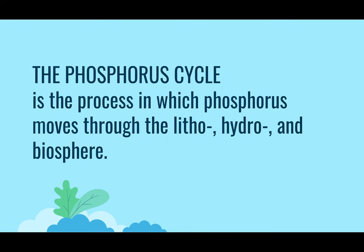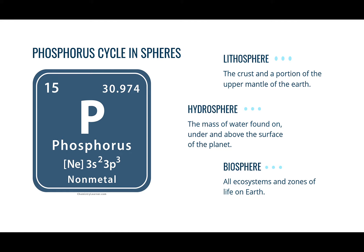The phosphorus cycle is the process in which phosphorus moves through the litho-, hydro-, and biosphere. The lithosphere is the solid rocky outer part of the earth's crust including the brittle upper portion of the mantle and crust. The hydrosphere is the mass of water found on, under, and above the surface of the planet — basically the total amount of water on a planet. The biosphere describes all ecosystems and zones of life on earth.